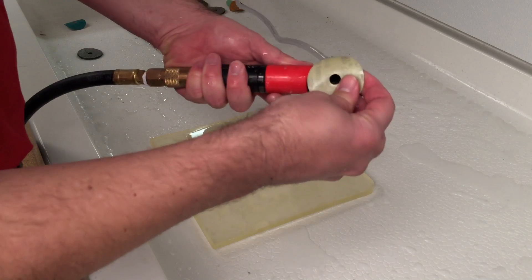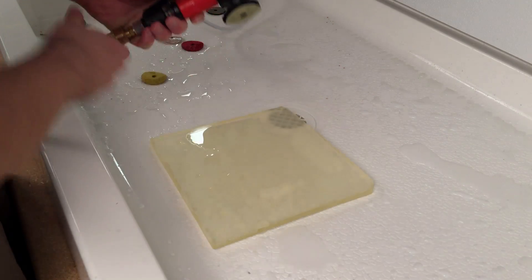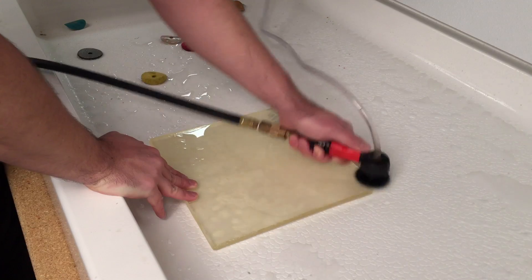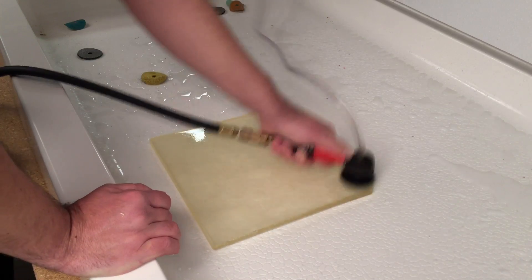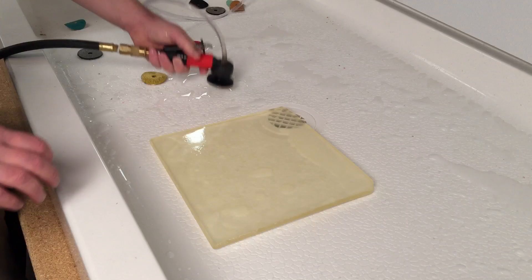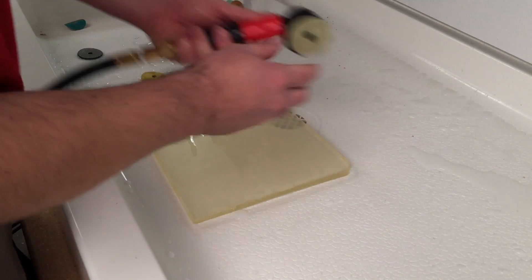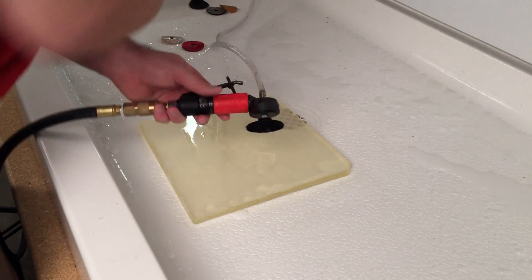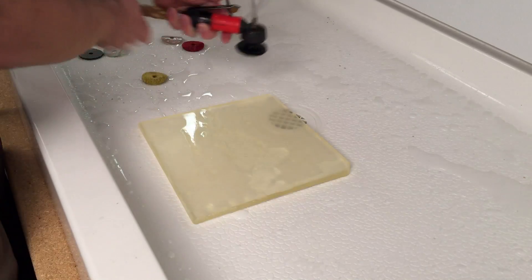This is our 300 grit electrostatic. The same process applies. It simply fixes on with Velcro, and we're good to go. As you can see, after our 300, our cast glass is getting finer and finer. It's almost got a clear sheen to it. It's very, very nice looking. We'll move now to our 400 and then our 600. Same process applies. Simple Velcro. Our 400 grit electrostatic. Sticks on the same routine. And here we go.